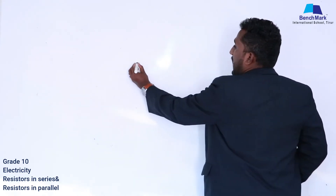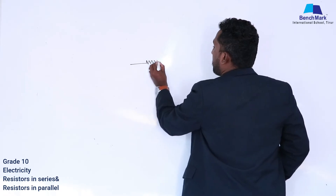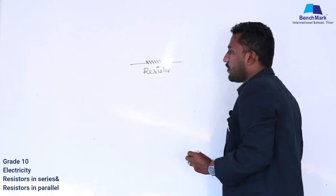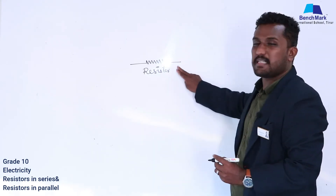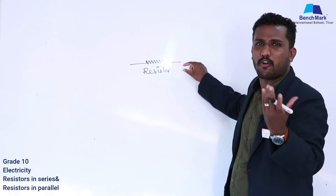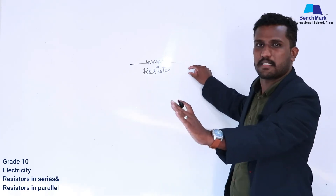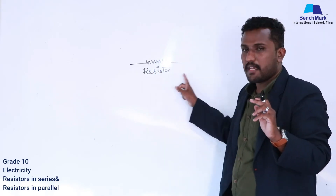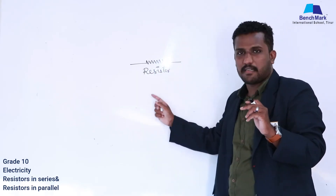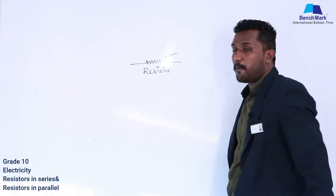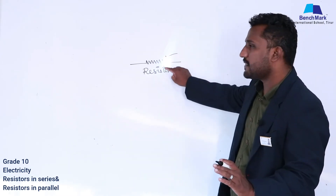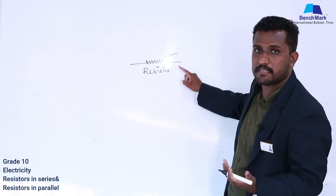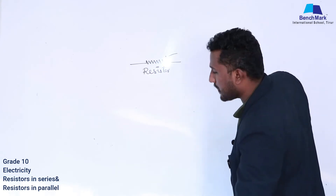Dear students, this symbol is what we call a resistor. A resistor is a component which offers resistance in a circuit. If I place a resistor in the circuit, it opposes the current. So a resistor is the device which offers resistance.